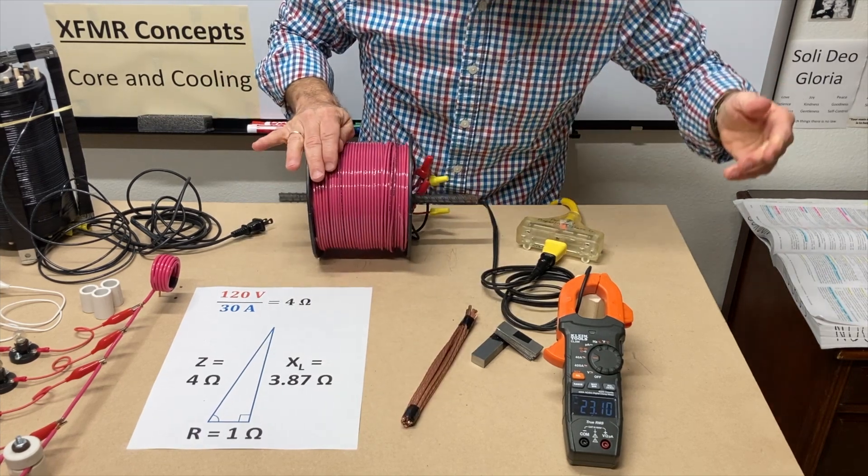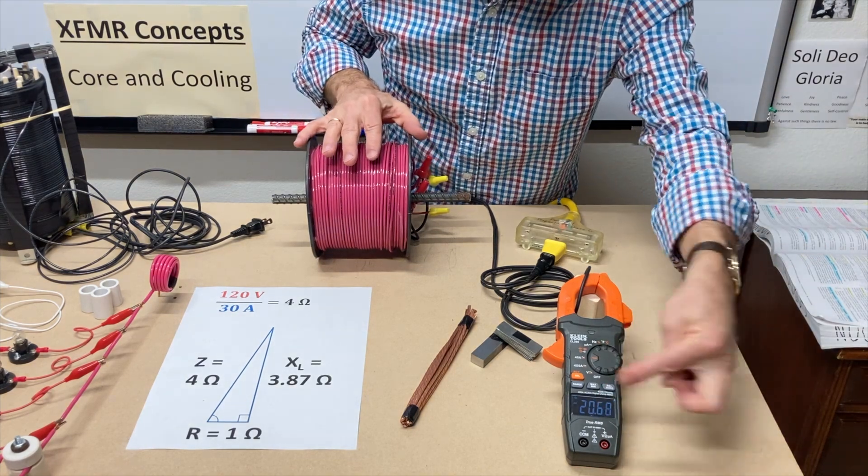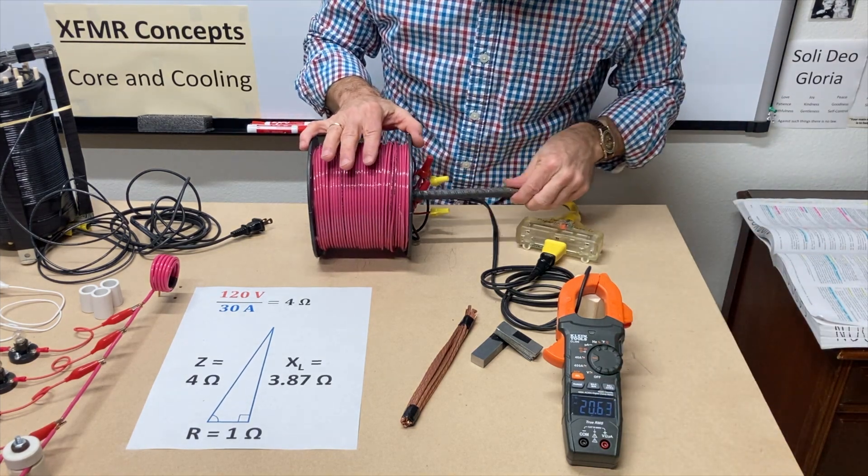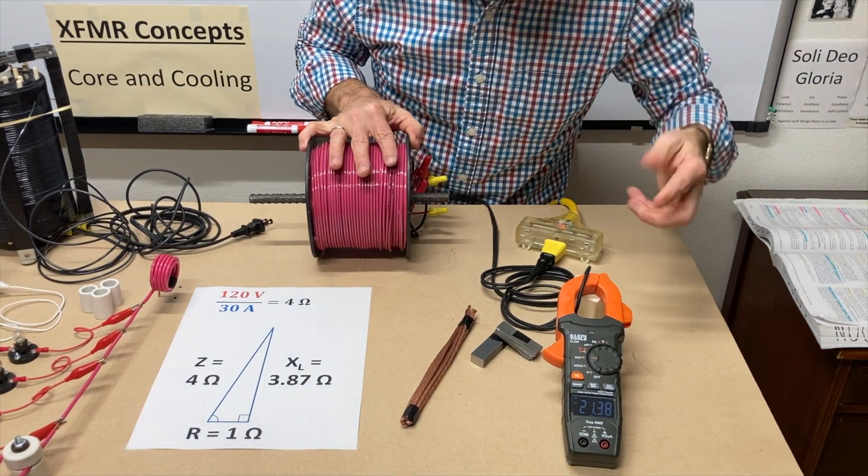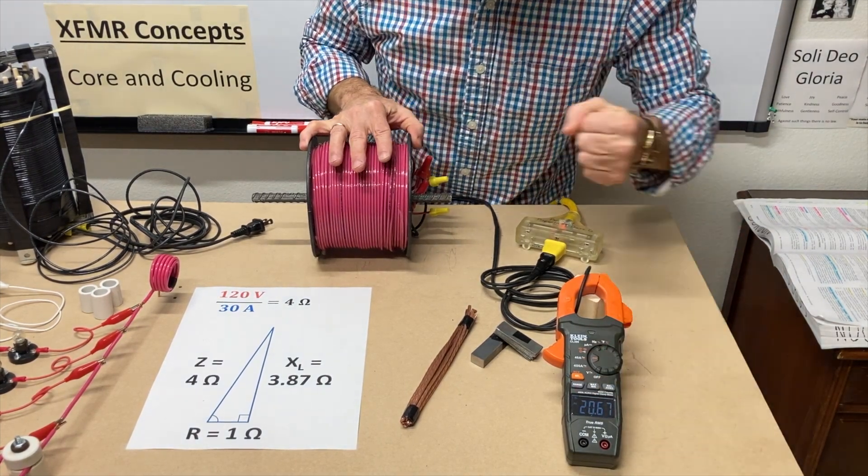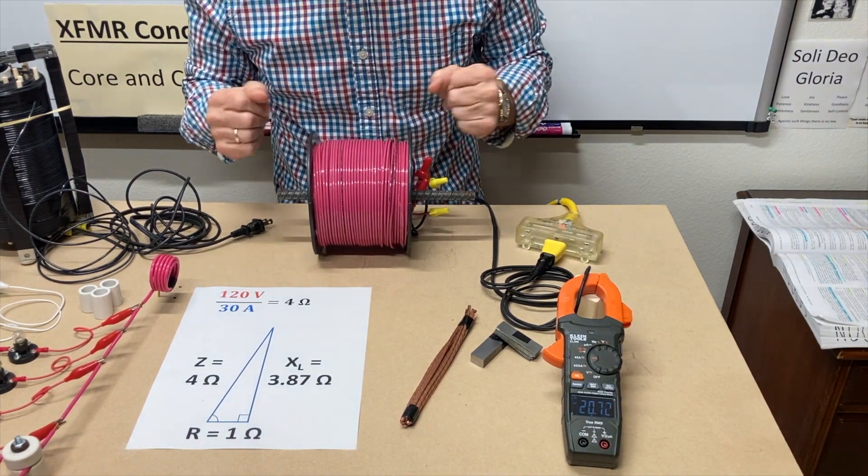Well, let's put this in here. Drops it down to 20 and a half. We went from 28 something down to less than 21. Pull it out. 27, 28. Put it in. Less than 21. I lost seven and a half amps just by putting this metal in here. What's going on?